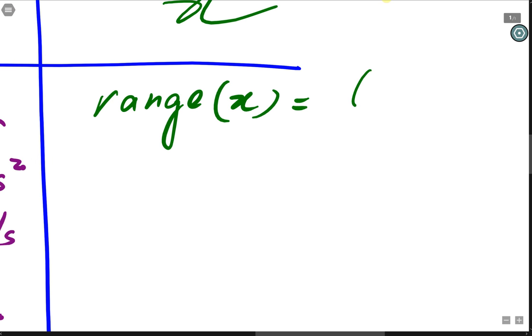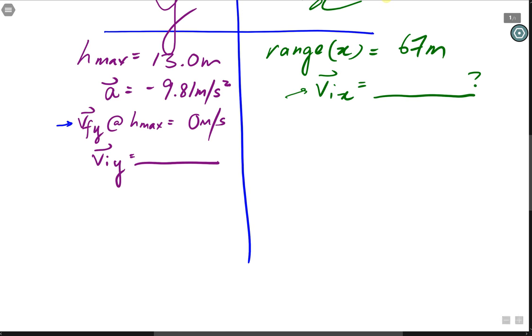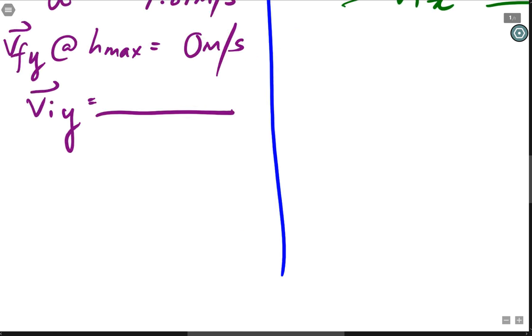As for the horizontal components, we have our range, x. This is 67 meters given in the problem. We want to find the vix. This is the horizontal velocity component. And because there is no acceleration in the horizontal direction, this is going to stay constant throughout the entire motion.